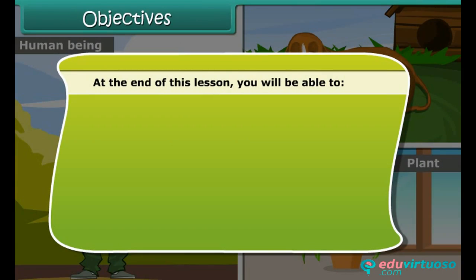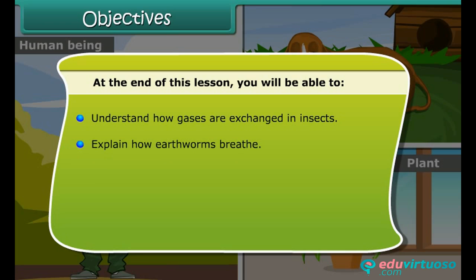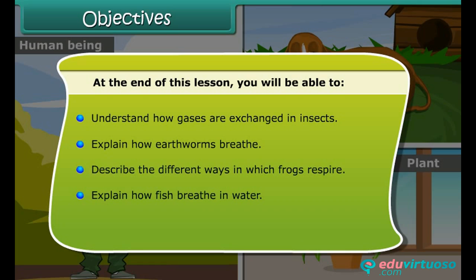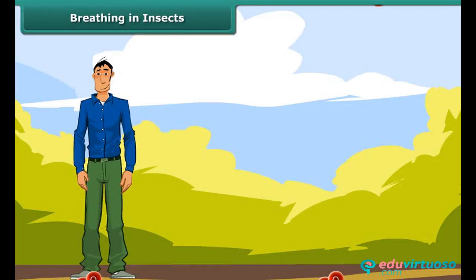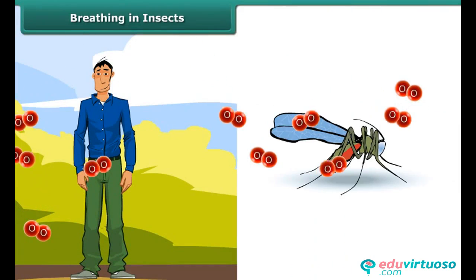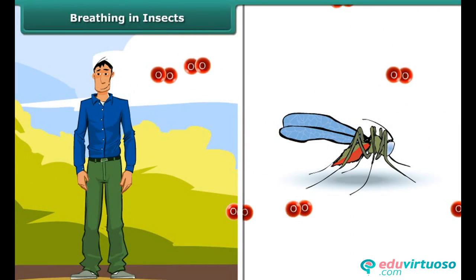Objectives: At the end of this lesson, you'll be able to understand how gases are exchanged in insects, explain how earthworms breathe, describe the different ways in which frogs respire, explain how fish breathe in water, and explain the breathing process in plants.